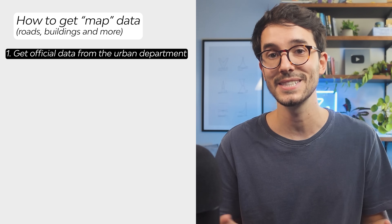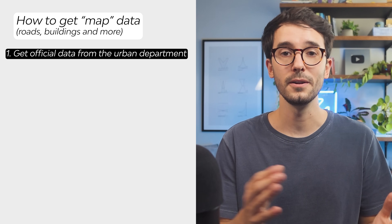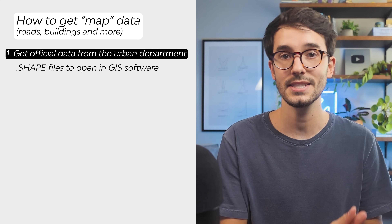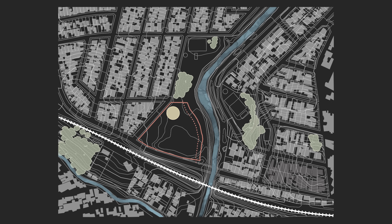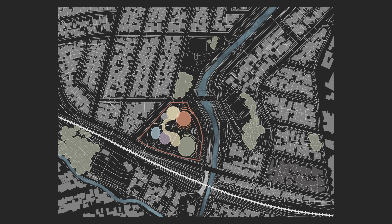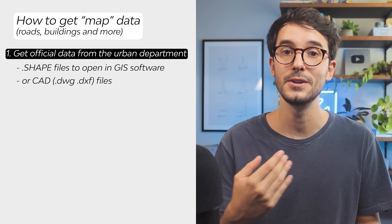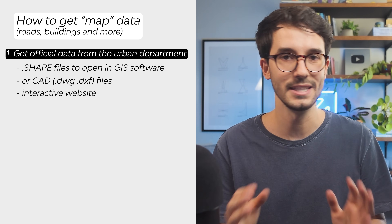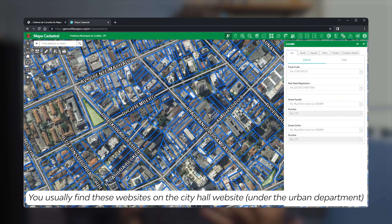One, and this is possibly the best scenario: your city, or the city you're designing in, has a great urban department. They provide all of this data in a .shape file that can be opened in GIS-type software, or even CAD files containing all of it. This was the case with my final thesis — all the maps and base maps I had access to in this ready-to-use data saved me so much time. Depending on your city's urban department, they might even provide you with an interactive website, and it's often possible to export CAD or PDF files from it. You may also want to check with your professors where you can get a hold of data like this.